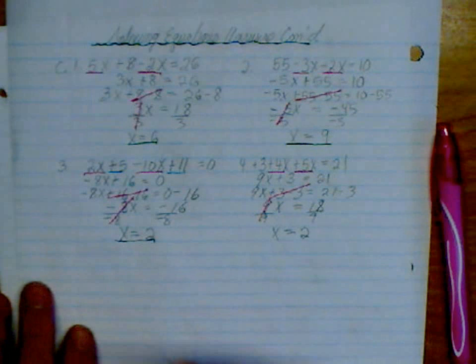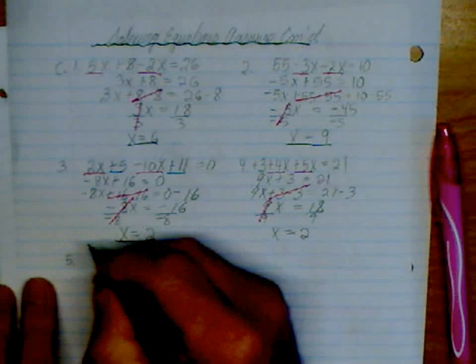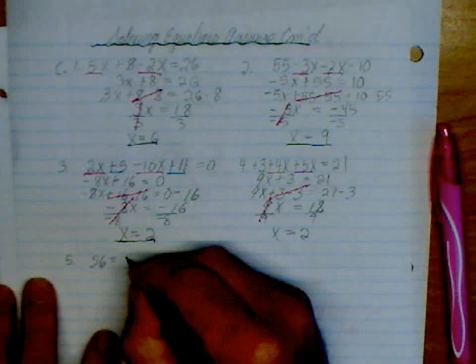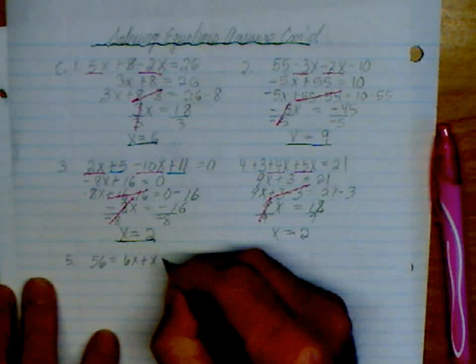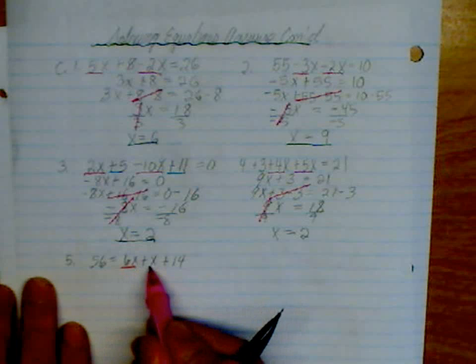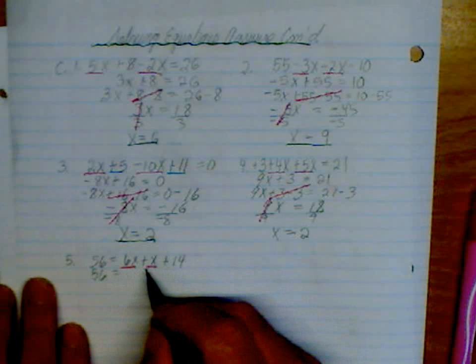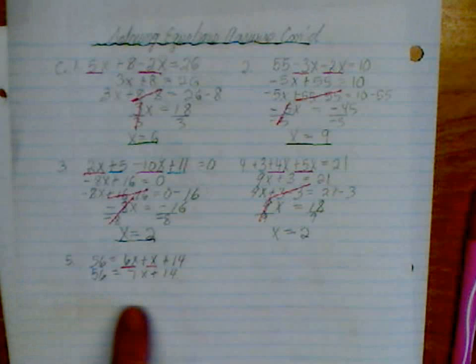Number 5. We have 56 is equal to 6x plus x plus 14. So the like terms are over on this side now. Which is fine. 6 plus 1 is 7x plus 14. I would go ahead and just leave that where it is. I'm going to subtract 14 from both sides.